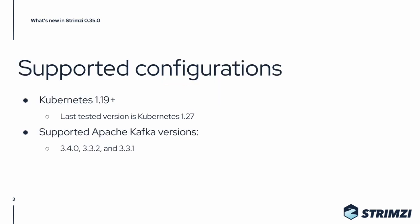This release supports Kubernetes 1.19 and newer, and the last version available during the release and also the last version with which we tested this release is Kubernetes 1.27. The supported Kafka versions remain unchanged — that means this release supports Kafka 3.4.0, 3.3.2, and 3.3.1.